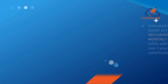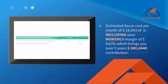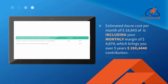Last but not least, the estimated Azure and Dynamics 365 cost of $18,843 per month includes your margin of $4,674 per month, which brings you over five years to close to $300,000 contribution.